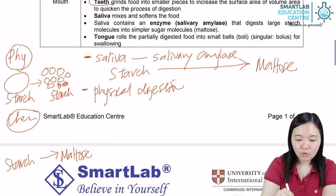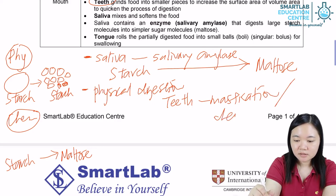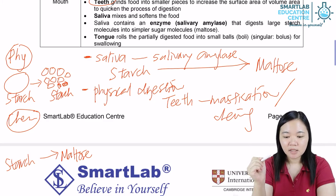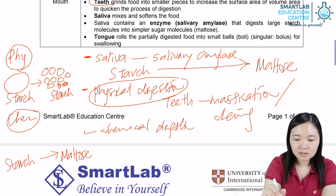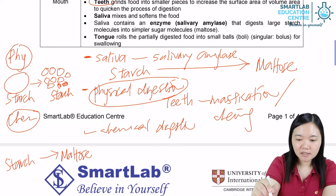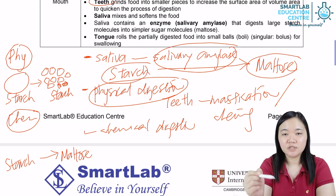Physical digestion involves teeth, which carry out mastication — also known as chewing. Chemical digestion, as highlighted earlier, is carried out by salivary amylase, which is an enzyme that causes starch to be broken down into maltose. It speeds up the chemical digestion of starch into maltose.